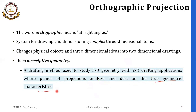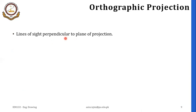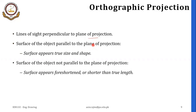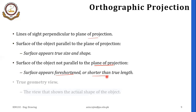In orthographic projection, the line of sight is basically perpendicular to the plane of projection. The surface of the object kept parallel to the plane of projection — that surface appears in its true size and shape. However, the surface of the object that is not parallel to the plane of projection appears foreshortened, or shorter than the true length.